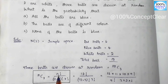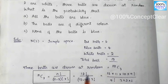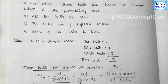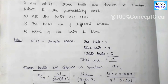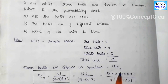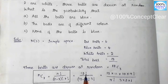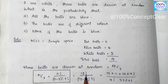So n value is 12: 12 factorial divided by (12 minus 3) factorial, which is 9 factorial, into 3 factorial. 3 factorial is 3 into 2 into 1. 12 factorial expands as 12, 11, 10, 9, 8, 7, 6, 5, 4, 3, 2, 1.